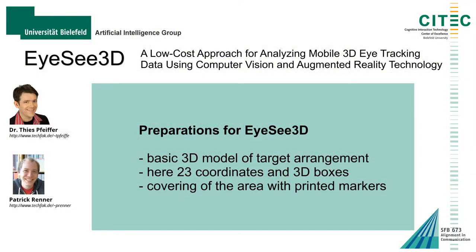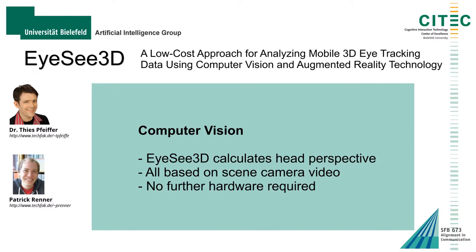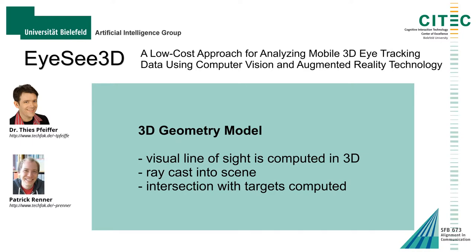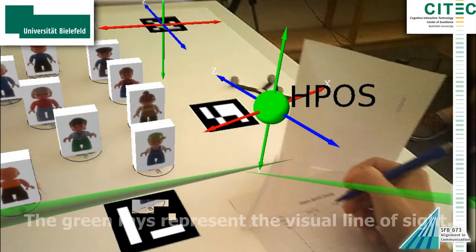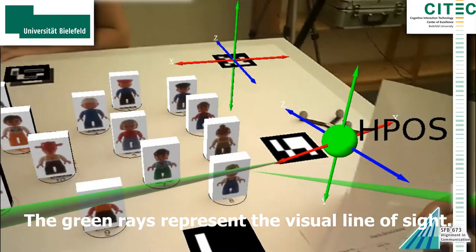Using IC3D is easy. You need a basic 3D model of the target arrangement — in our case 23 coordinates and 3D boxes. You would also need to cover the area with printed markers. Tracking is done using computer vision on the scene camera video and no further hardware is required. Based on the tracked 3D position of the eye tracking device, we cast the visual line of sight into the 3D world and intersect this ray with the created 3D models.